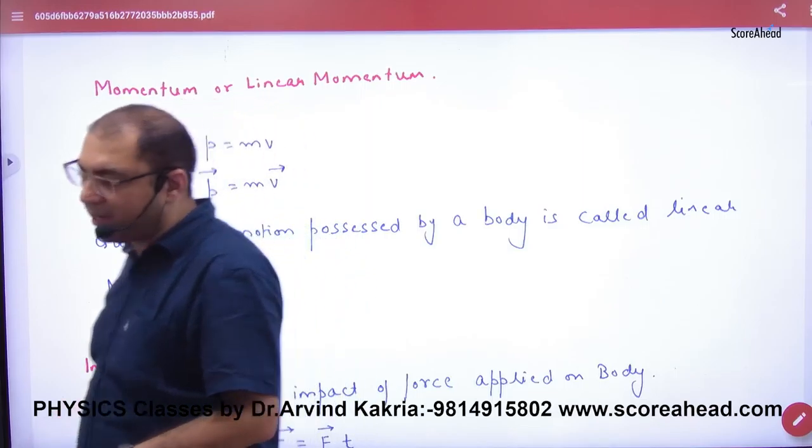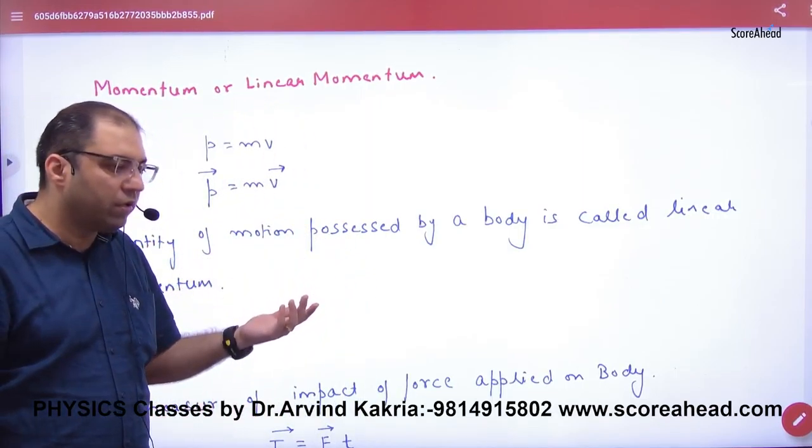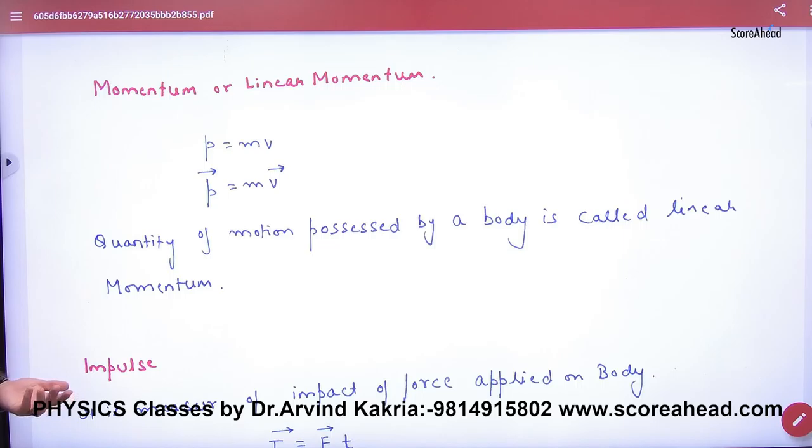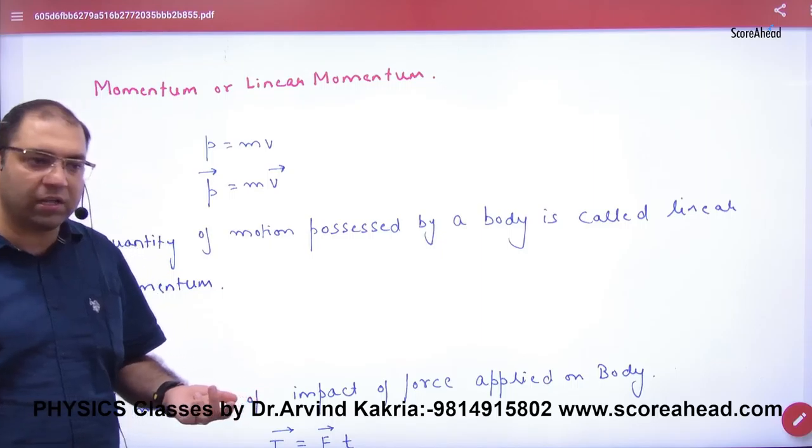How do we define P vector or momentum? It is the quantity of motion possessed by a body. It is called linear momentum. Either mass or velocity or both determine whether momentum is a vector.